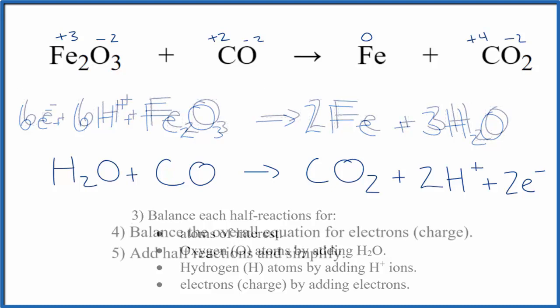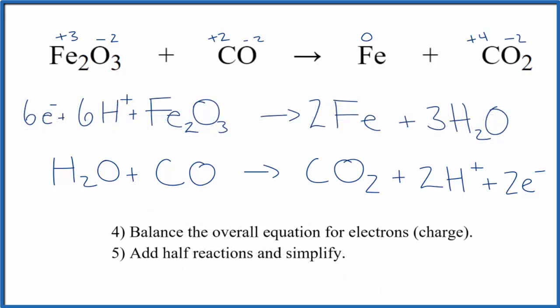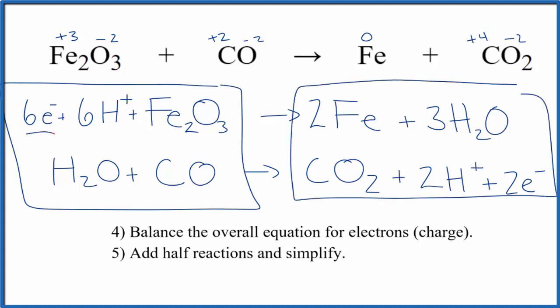Now we can balance this overall equation for charge. You want to think of it this way: all of these things here are the reactants. They're reacting to form the products. 6 electrons in the reactants and only 2 in the products, so that's not balanced. In redox reactions, we're really trying to balance both the atoms and the number of electrons. Here's how we fix that.